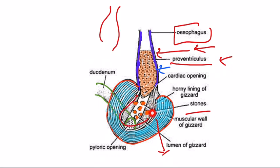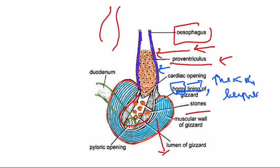The lumen of the gizzard is internally covered by thick, rough, and horny epithelial cells. Inside the lumen, stones are present, which are helpful for the bird to grind food particles into small pieces.